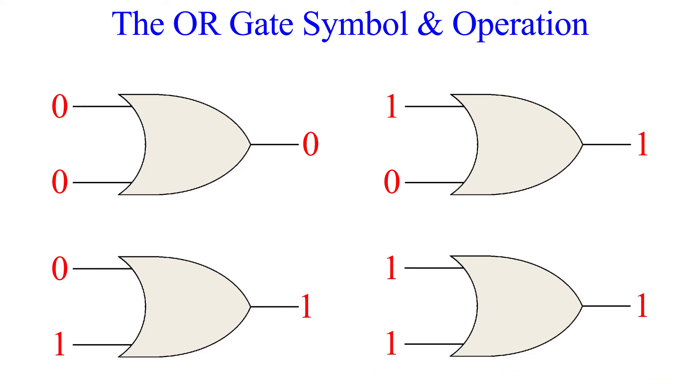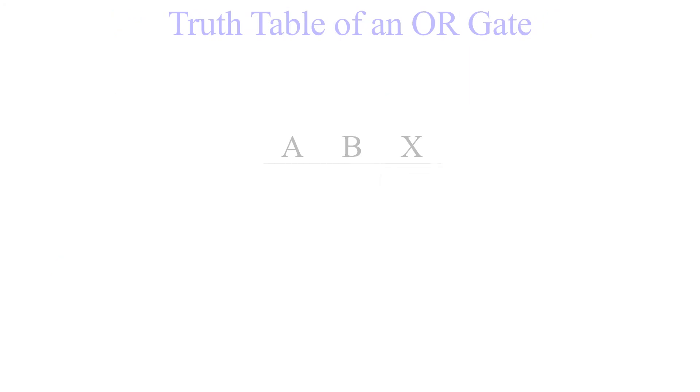Let's look at the truth table of a two input OR gate. The inputs are A and B. The output we will call X. So under our inputs, we're going to count up in binary starting with 0. So the first row is 0, 0. The second row is 0, 1. The third row is 1, 0. And the fourth row is 1, 1. These are the four possible combinations of inputs.